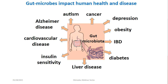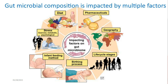Gut microbial composition is impacted by multiple factors. Early life events, such as the birth process — whether vaginal versus C-section — impact later gut microbial composition, but also feeding method in nurture, childhood, and different stresses through life. Diet plays a very important role, as does medication, geographical location, and stage in the life cycle.